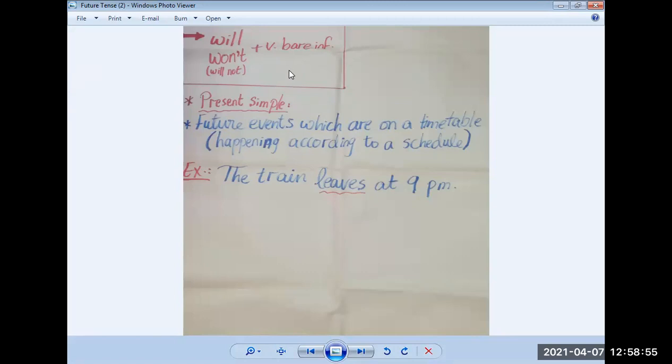So now we covered three forms, will, going to, and the present continuous. We're left with the last form, which is the present simple. Can we use the present simple to express the future? Yes, under one condition, which is a future event which is going or following a timetable. It happens according to a schedule.